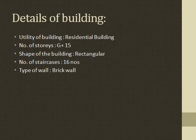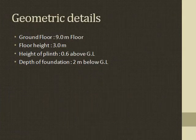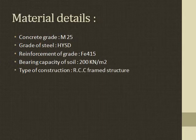Details of the building: the utility is residential, with G plus 15 storeys. The shape of the building is rectangular, with 16 staircases, and the wall type is brick wall. The ground floor height is 9 meters, floor height is 3 meters, plinth height is 0.6 meters above ground level, and foundation depth is 2 meters below ground level. Concrete grade used is M25, steel grade is HYSD bars with reinforcement Fe415. Bearing capacity of the soil is 200 kN/m², and the construction type is RCC frame structure.